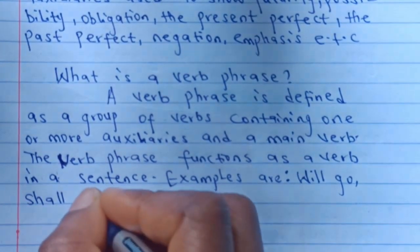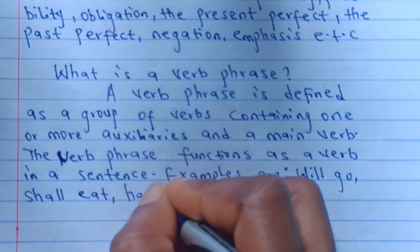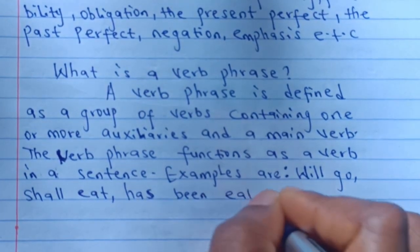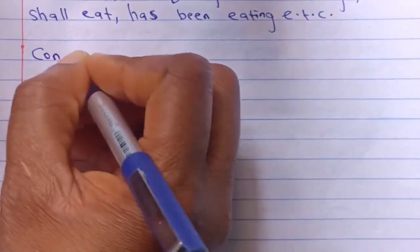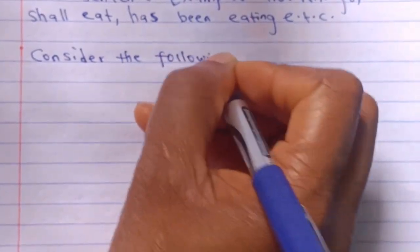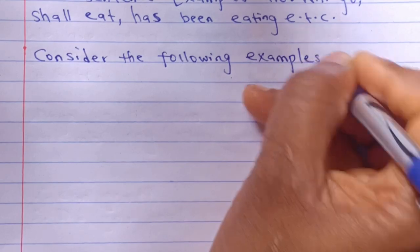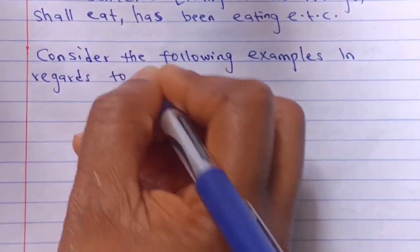The verb phrase functions as a verb in a sentence. Examples are will go, shall eat, has been eaten, etc. Consider the following examples in regards to the functions of verb phrase.